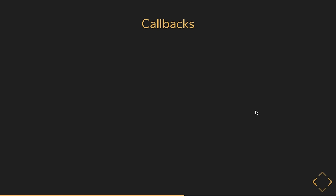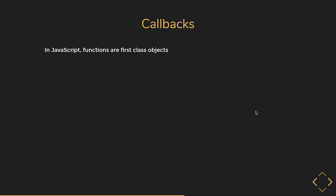In this lecture, we are going to learn about callbacks in JavaScript. In JavaScript, functions are first-class objects. Just like an object, a function can be passed as an argument to another function, and a function can also be returned as a value from other functions. Let's understand this with a simple example.